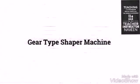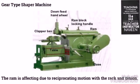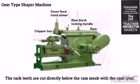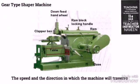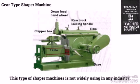In Gear type Shaper Machines, the RAM is given reciprocating motion via a rack and pinion. The rack teeth are cut directly below the RAM and mesh with the spur gear. The speed and direction in which the machine will traverse depend on the number of gears in the gear train. This type of Shaper Machine is not widely used in industry.